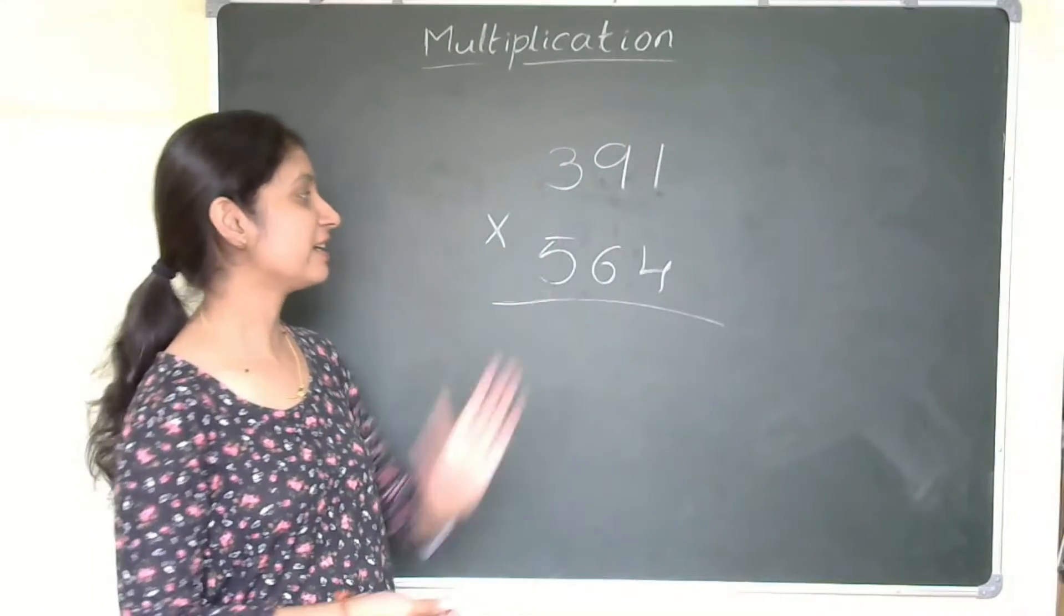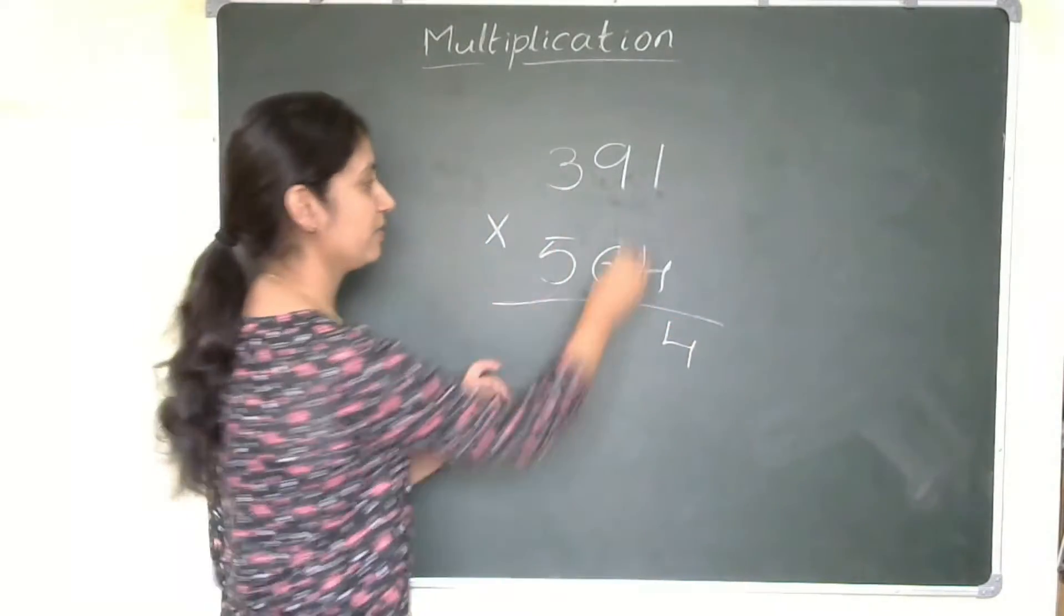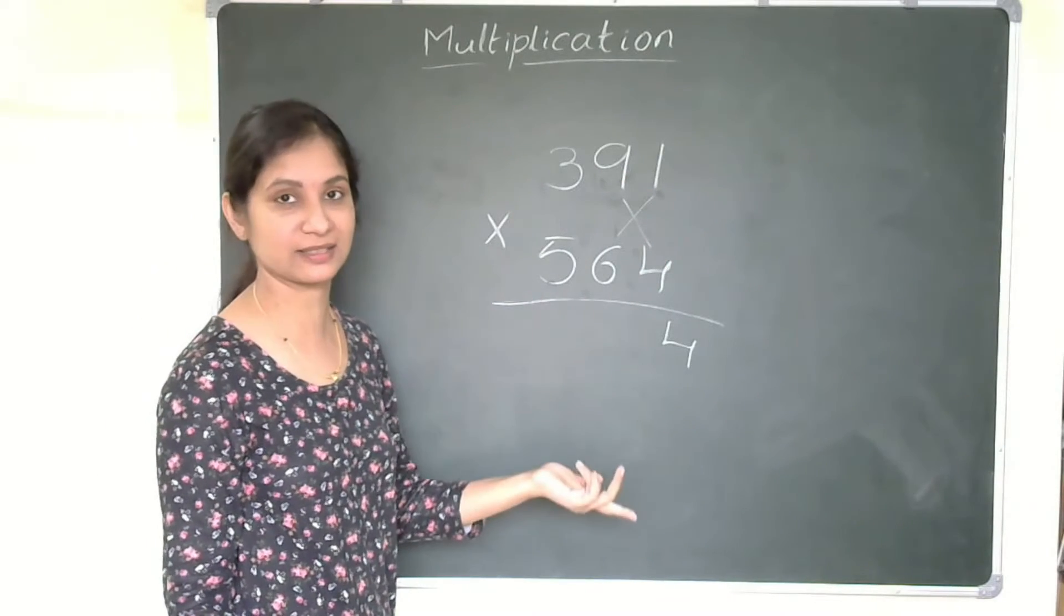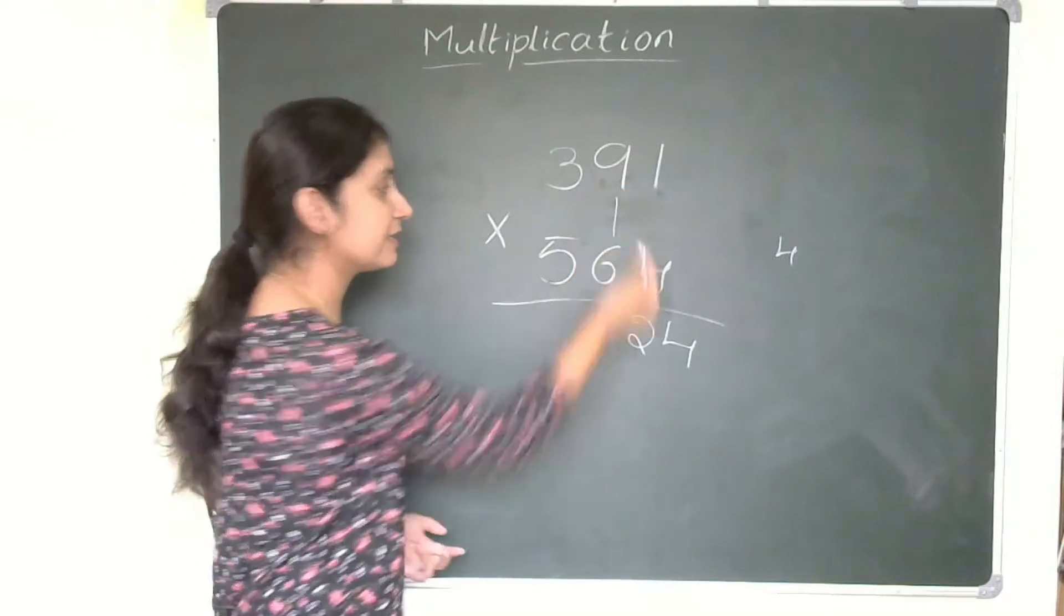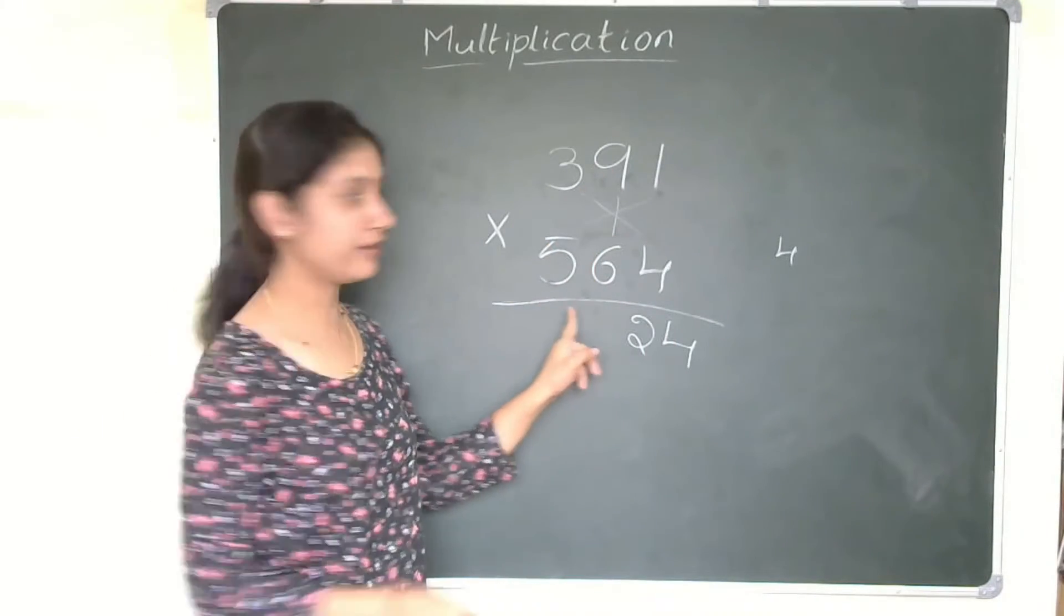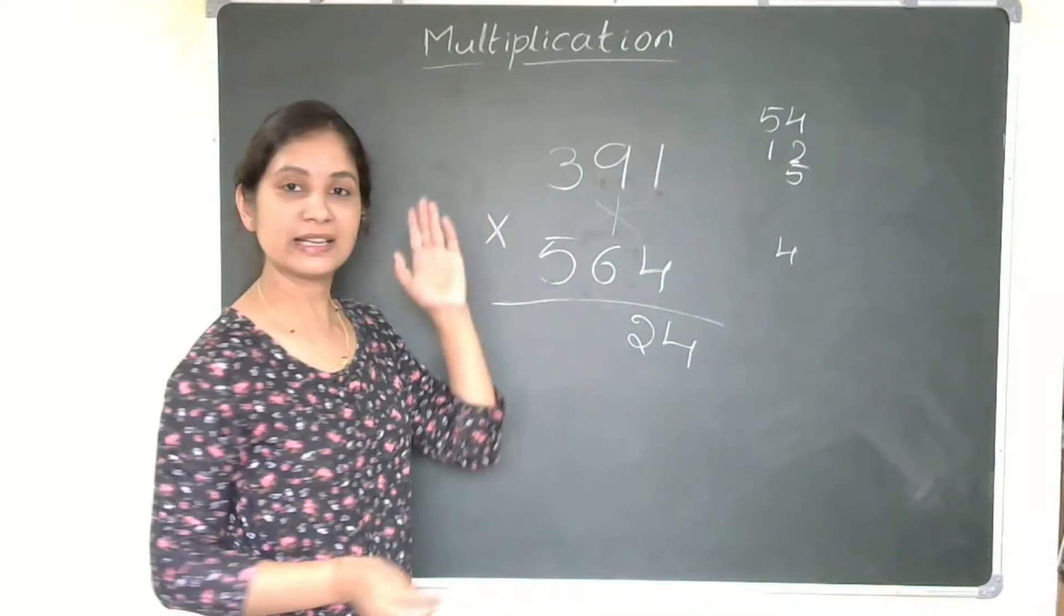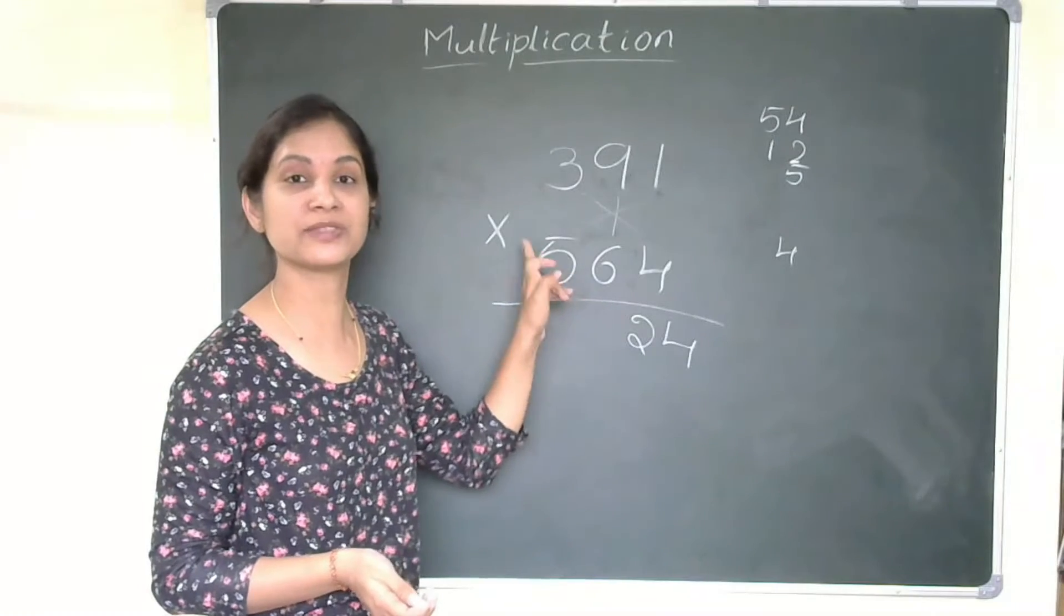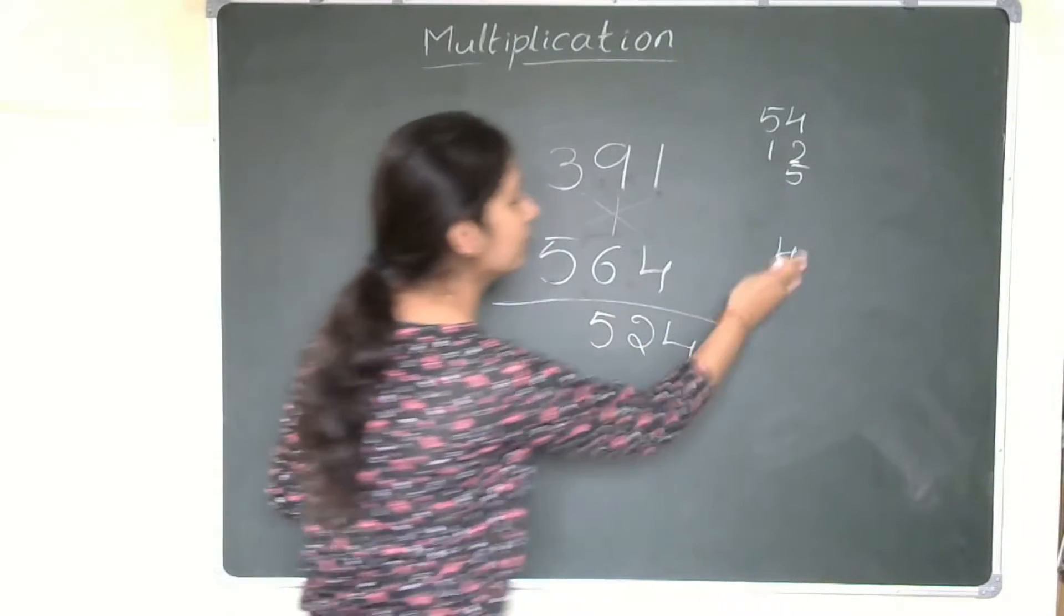As our third example, I am taking 391 and 564. Now we will start from right hand side. 4×1 is 4. Now 9×4 we will do and 6×1 we will do. 9×4 is 36 plus 6×1 is 6, that is 36 plus 6. Yes, it is 42. So I will write 2 here and 4 is carryover. Now the third step is 9×6 first, we will do 5×1 and 3×4. So 9×6 is 54. For your convenience, I will write again 54, 3×4 is 12, 5×1 is 5. So you can directly do it mentally also 54 plus 12 is 66 plus 5, 66 plus 5 is 71 plus 4, yes 75. So 5 here, 7 is the carryover.